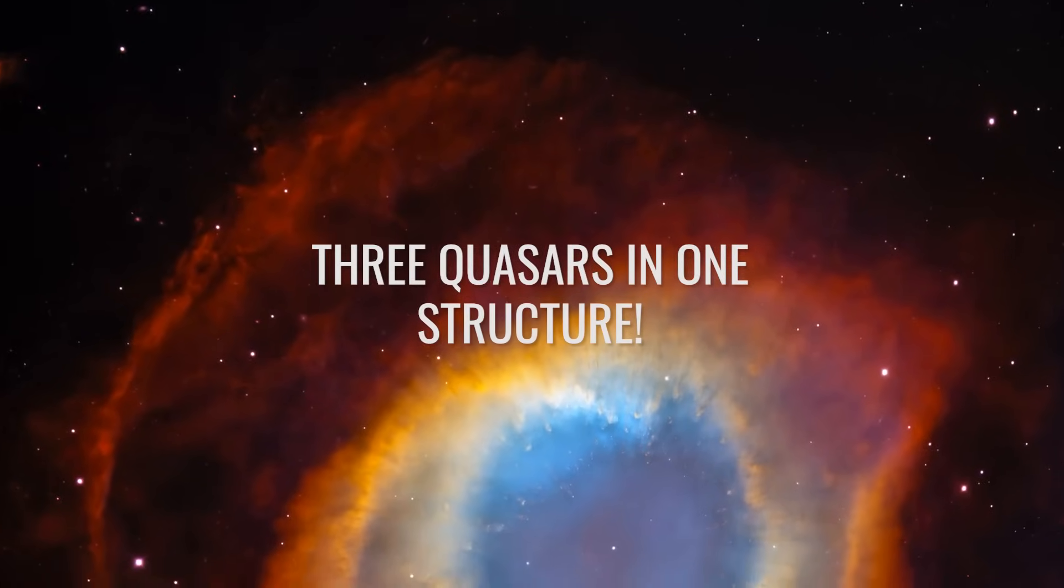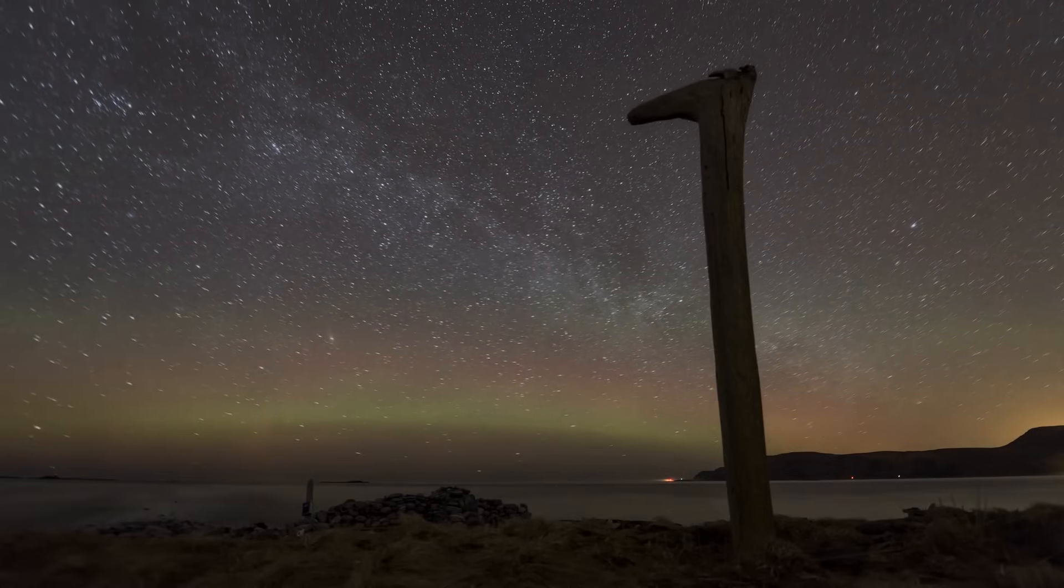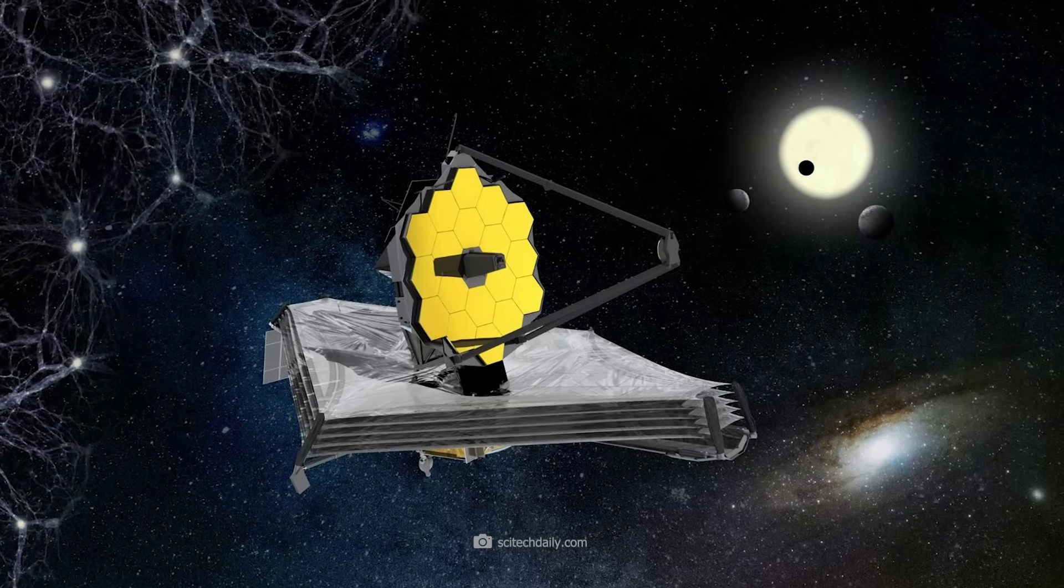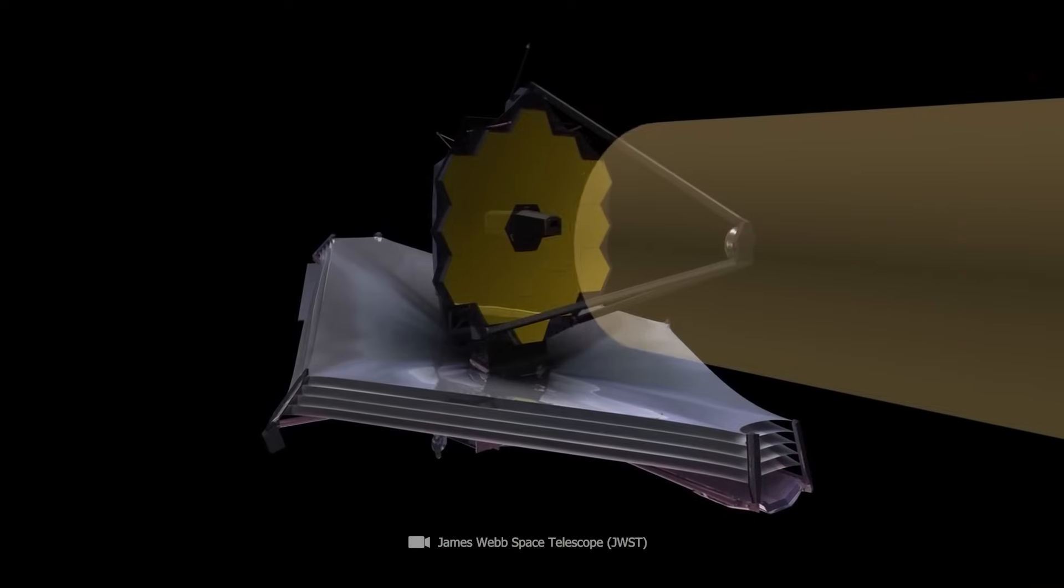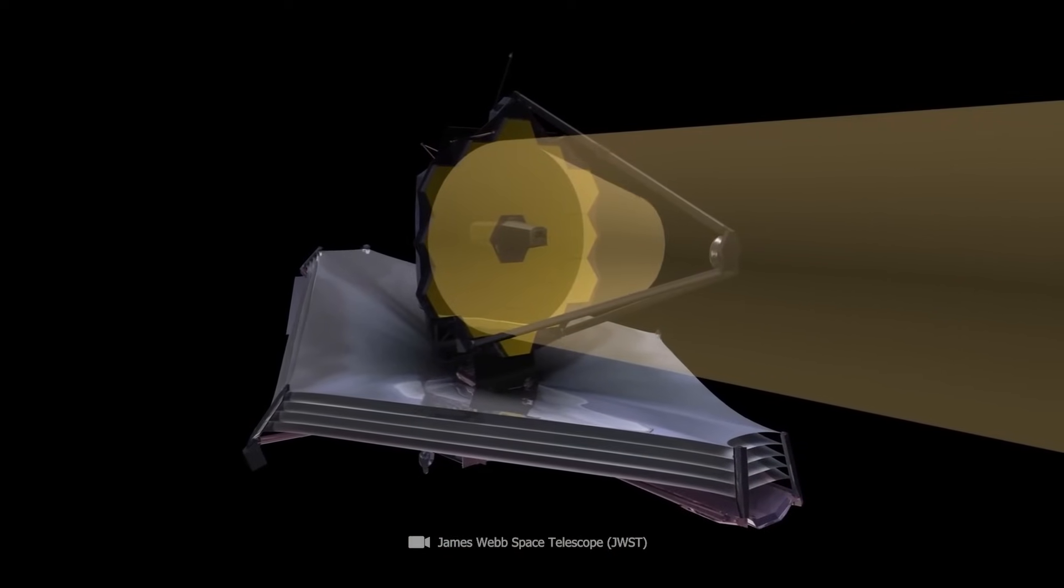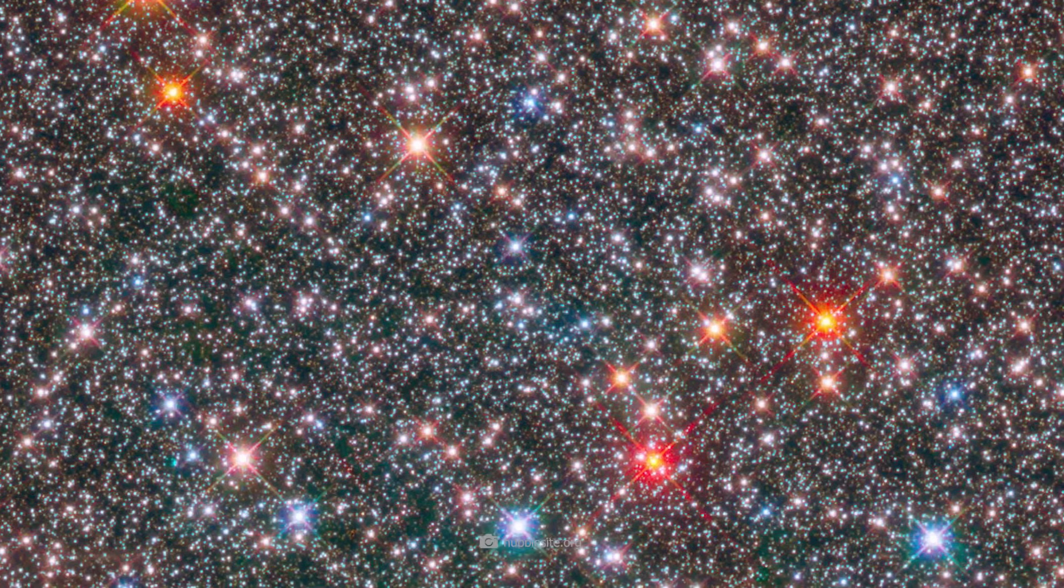Three quasars in one structure. Researchers will now use all the technical refinements on board the James Webb Space Telescope to study three of the most distant quasars. The James Webb Telescope has four main instruments that can collect and analyze light from distant stars, galaxies, or in this case, quasars.